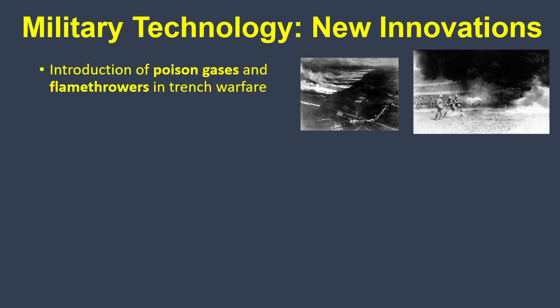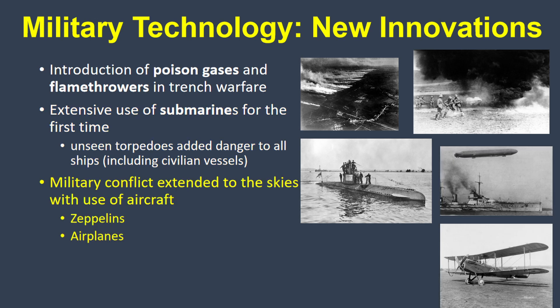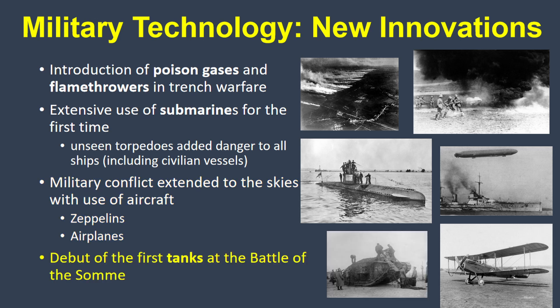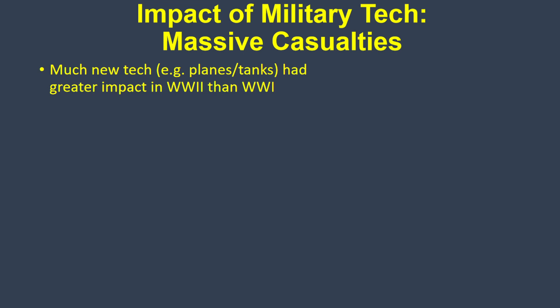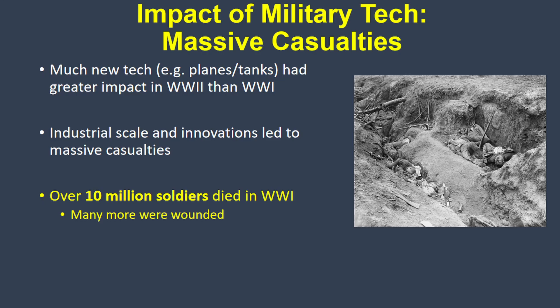Industrialization also allowed for new innovations that radically changed the nature of warfare. Poison gases and flamethrowers added new horrors. On the sea, submarines were used extensively for the first time — their ability to launch torpedoes below the surface added unseen dangers to ships, including civilian vessels. For the first time, the skies became a battleground with the use of the first military aircraft, like airplanes and zeppelins. The first tanks made their debut in the Battle of the Somme. Much of this military tech, like planes and tanks, would have a much bigger impact on the Second World War than the first. But the industrial scale of weapons caused an industrial scale of death — over 10 million soldiers died, and many more were wounded.